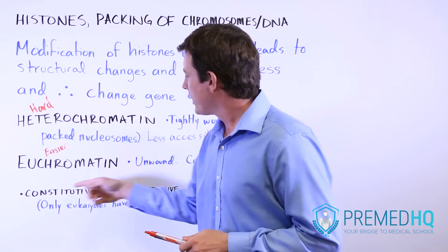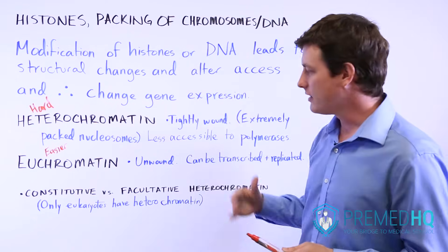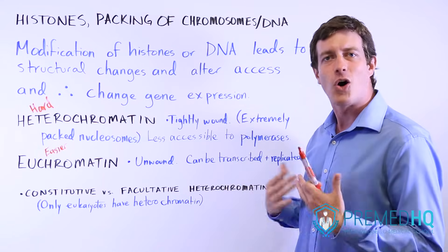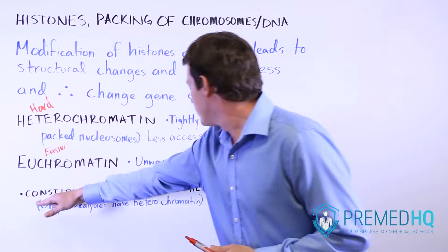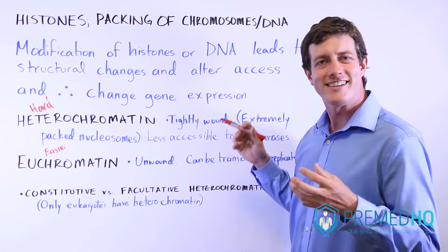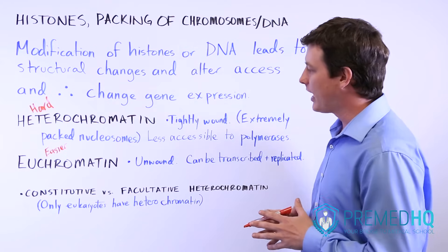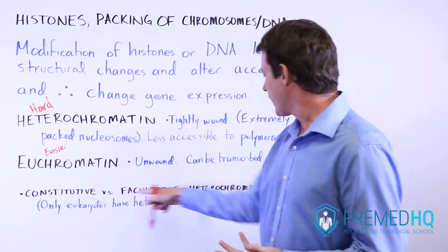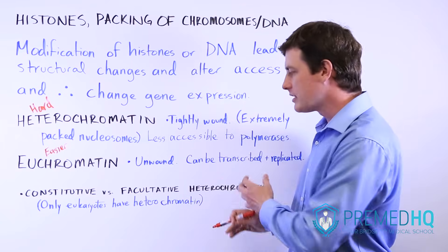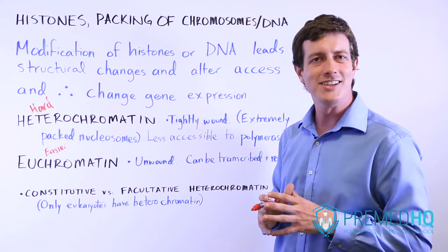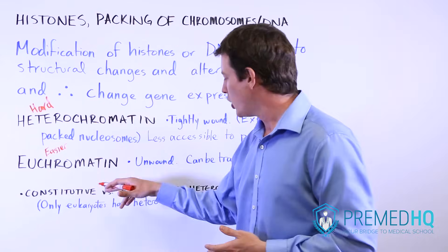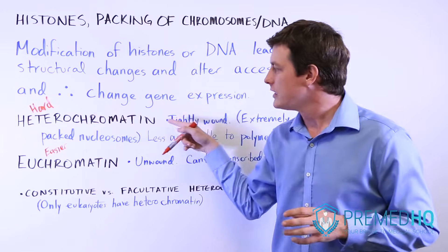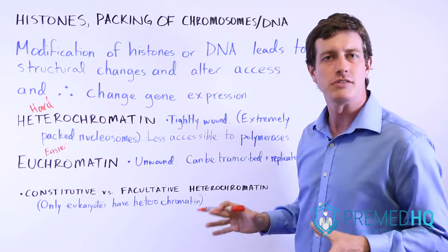When dealing with these two things, you might encounter the term constitutive, which refers to something that is always in that state. You can have constitutive heterochromatin that is always in the densely packed form — it will not be expressed, replicated, or translated. Whereas other regions are facultative, meaning they can be heterochromatin that's tightly packed, or unwound into euchromatin. These distinctions only exist in eukaryotic cells, but it's important to know that some will always be in this form, whereas others will only be facultatively in that form.